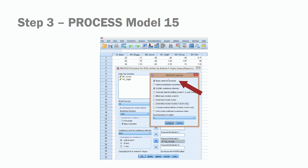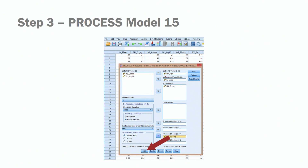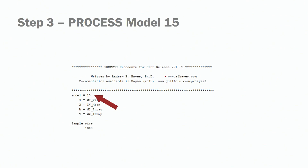Don't forget to mean center the products because we will have an interaction term and we want to avoid multicollinearity issues. Once you do that, click OK and you'll have the output.